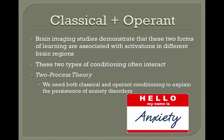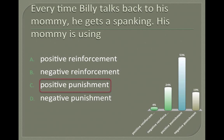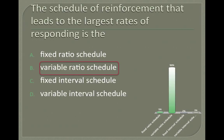For review: every time Billy talks back to his mom and gets a spanking, his mom is using positive punishment — we're trying to decrease the talking-back behavior, and the spanking is administering a stimulus. The schedule of reinforcement that leads to the largest rates of responding is the variable ratio schedule. Several things I've said word for word in this lecture will be on the exam — I'm trying not to trick you on this section since we didn't have this lecture in class.